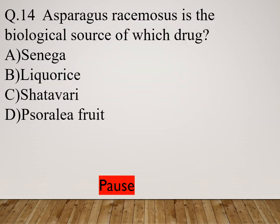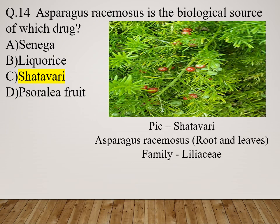Question 14: Asparagus racemosus is the biological source of which drug? Option A: Senega. Option B: Lycaeas. Option C: Shatavari. Option D: Soralia fruit. The right answer is Shatavari. Scientific name is Asparagus racemosus; root and leaves are mainly used; family is Liliaceae.